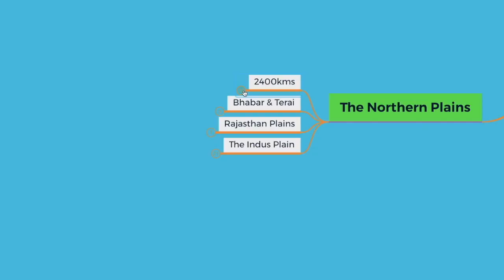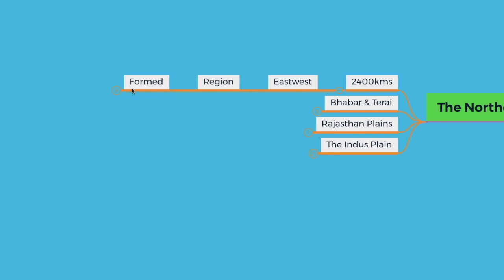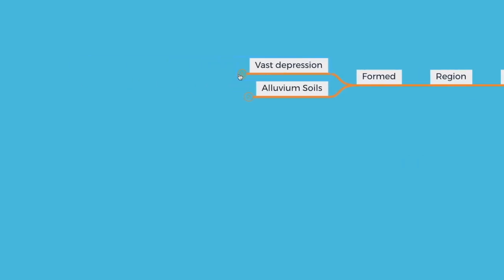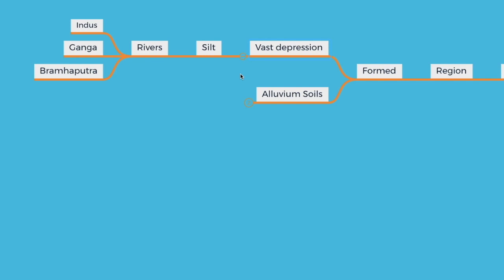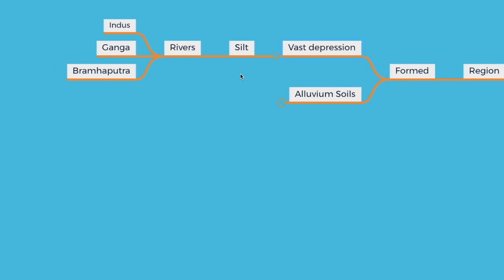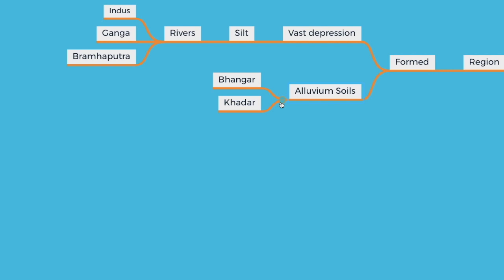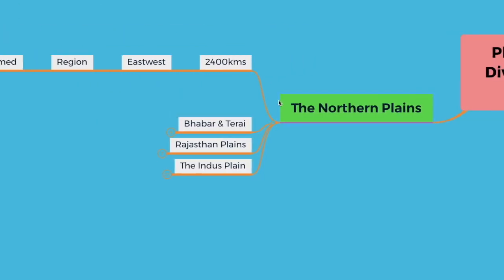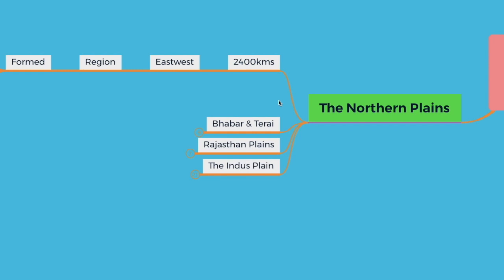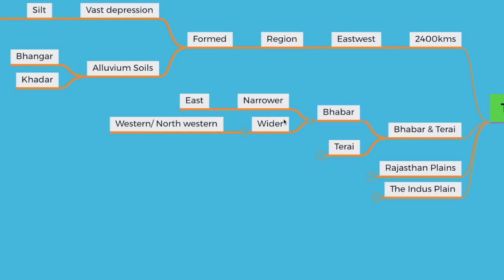Let's look at the Great Northern Plains. They extend over a distance of 2,400 kilometers in the east-west direction and are formed by the vast depression filled with silt brought down by the rivers — the Indus, Ganga, and Brahmaputra. This region is rich with alluvium soil, that is Bhangar and Khadar. Moving on to Bhabar and Terai: Bhabar lands are narrower in the east and wider in the western and north-western hills region. The Shivaliks disappear in the Bhabar belt, and to the south they reappear creating a wet, swampy, and marshy region known as Terai.